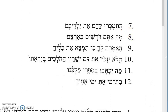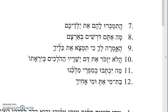Number seven: ha-timkeru lahem et yaldeichem. The verb timkeru means you will sell, but it has a Hey with a hataf patah in front of it, making the whole sentence an interrogative. So: would you sell to them your children? The translation is: would you sell your children to them? Hopefully the answer is no, although desperately poor people did sell their children into servitude.